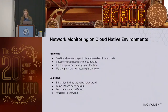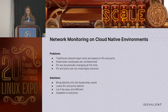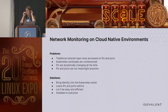What are the main challenges right now on cloud native environments? The problem is that traditional network monitoring tools are based on IPs and ports. Kubernetes workloads are containerized, and IPs and ports are not meaningful anymore — IPs are dynamically changing all the time and don't provide any meaningful identity. We need a solution that brings identity into the Kubernetes world, leaving IPs and ports behind, and that is easy, efficient, and available for everyone to use.